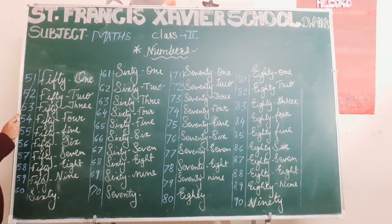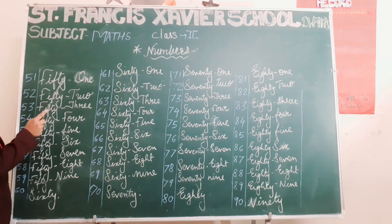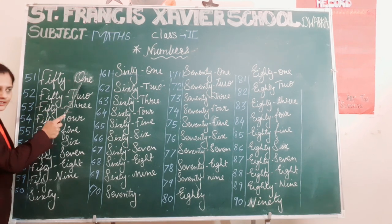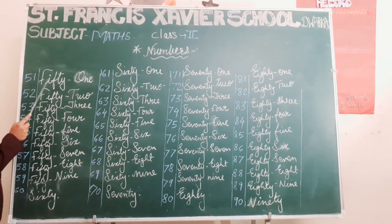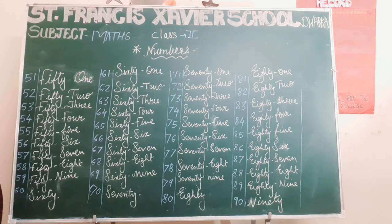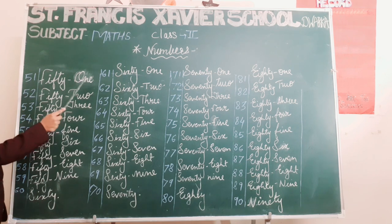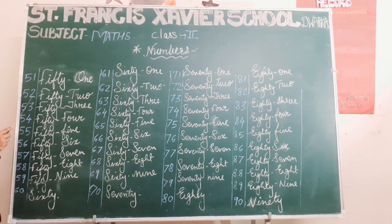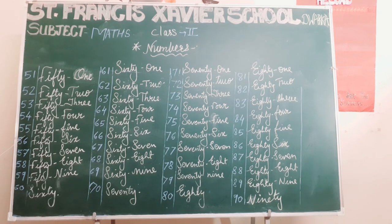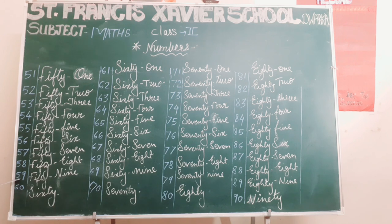The first number is 51. F-I-F-T-Y O-N-E, 51. Students, F-I-F-T-Y is the spelling for the number 50. As you had learned the spellings of numbers 1 to 9, you just have to add them: 51, 52, 53, 54, 55, 56, 57, 58, 59.